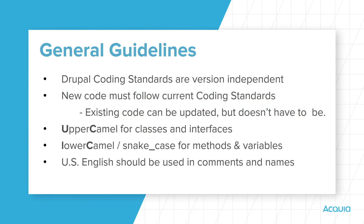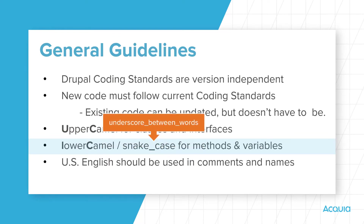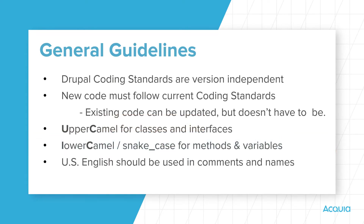For naming conventions, it's important to remember that classes and interfaces always use upper camel casing. Methods and class properties should be consistent in using either lower camel naming or snake case using underscores. Strive not to mix lower camel or snake case naming — be consistent with the approach that you use. When you type comments or name code elements such as methods, functions, constants, or classes, US English spelling should be used. For example, the word 'color' should be spelled C-O-L-O-R and not C-O-L-O-U-R.